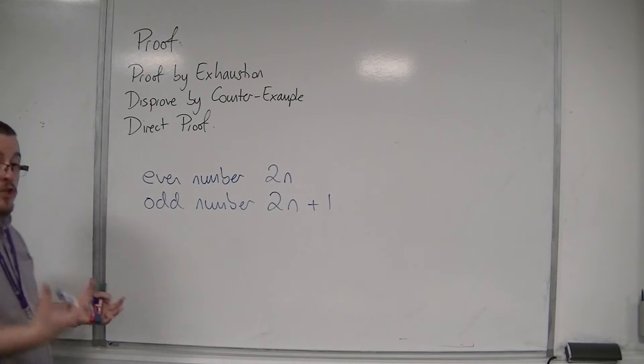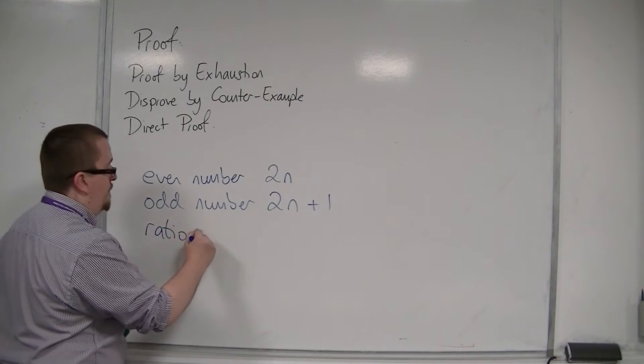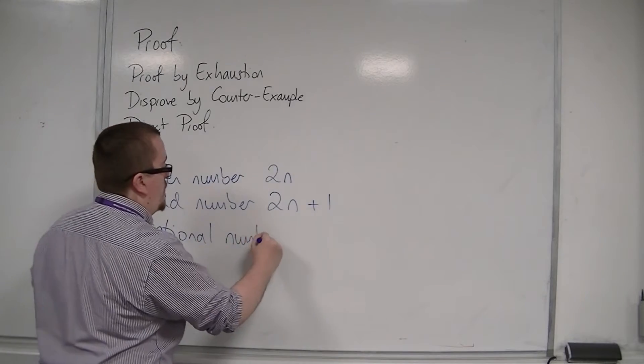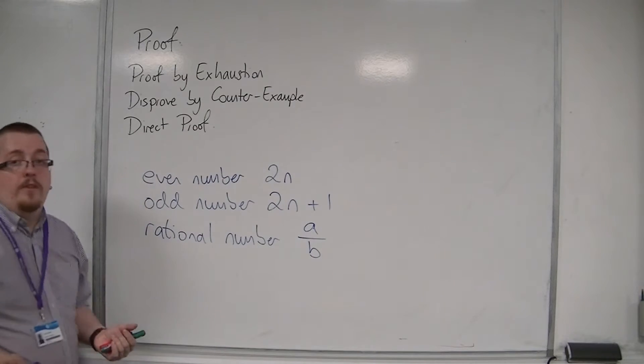We could have rational numbers being asked of you. So a rational number is a fraction, or a number that could be represented as a fraction. So we could represent that as a over b, for example.